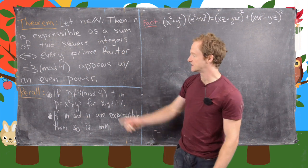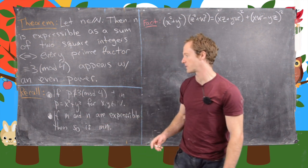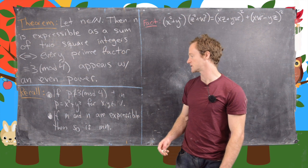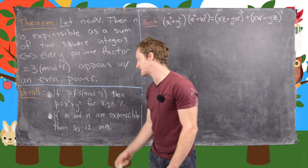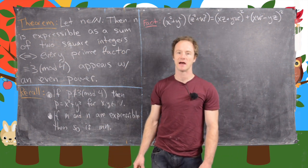And then we also have these other facts, which says that if p is not congruent to 3 mod 4, then we can write that prime as a sum of two squares. And we also have this fact, which was used in the proof of this theorem, which is if m and n are expressible, then so is m times n.